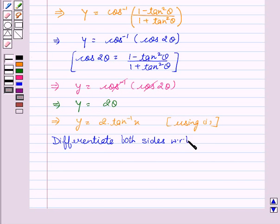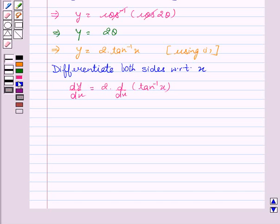With respect to x, we get dy/dx equals 2 times d/dx of tan inverse x. This implies dy/dx equals 2 times 1 upon (1 plus x squared).